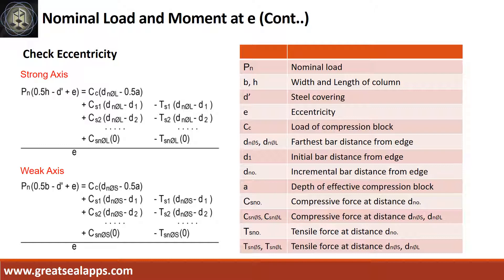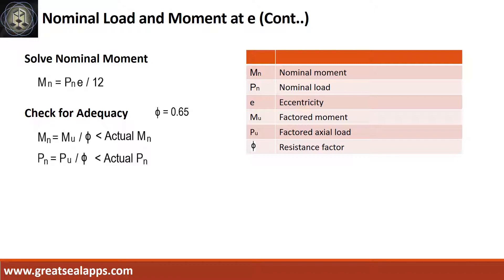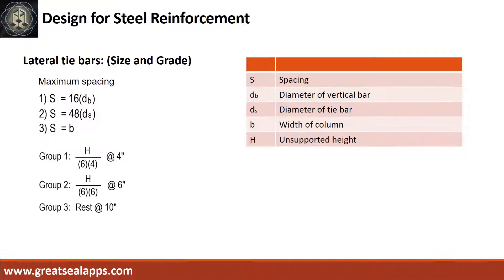Solve the given computations to check the eccentricity of the strong or weak axis, then solve the actual nominal moment. To check for adequacy, the design moment should be less than the actual moment, and the design axial load should be less than the actual axial load. Then follow the computations for lateral tie bars.